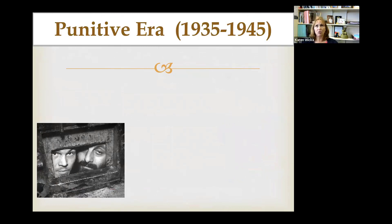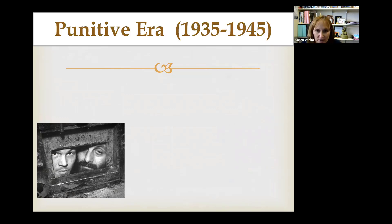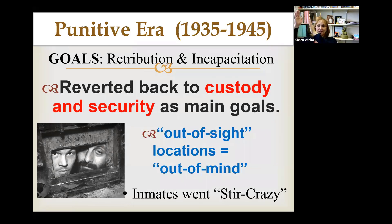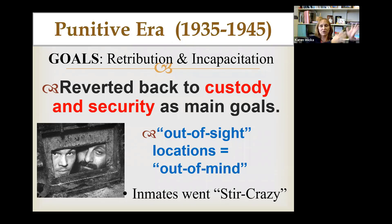Since inmates could no longer be made to work externally, we lost that option and switched back to what's called the punitive era. One thing you'll notice through all of this is we tend to swing back and forth: lock them up and punish them, then maybe reform them and rehabilitate them — then when that doesn't work, lock them back up. So we're back to the punitive era.